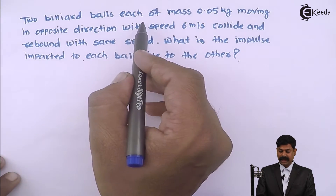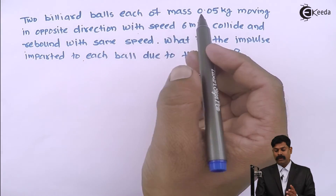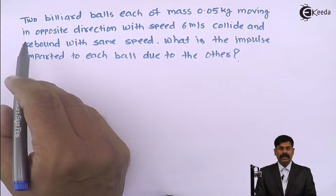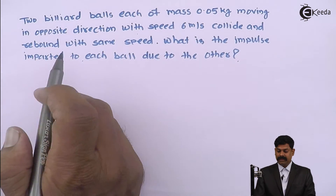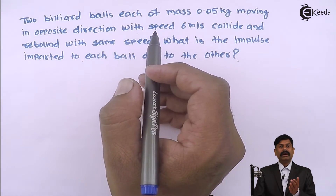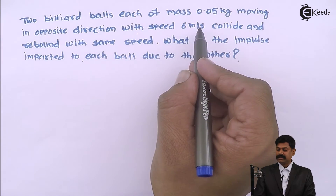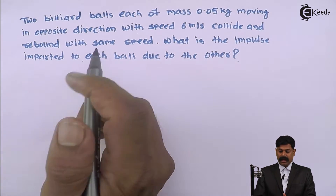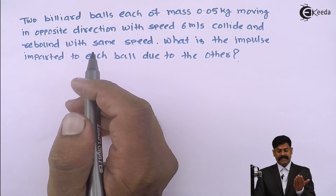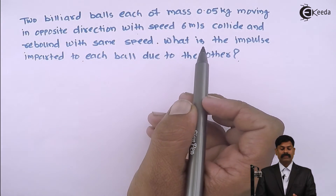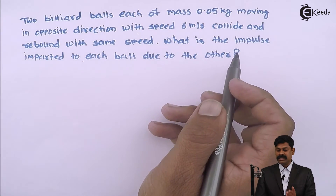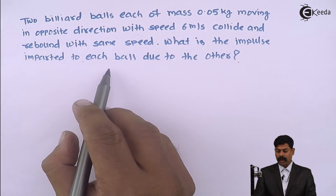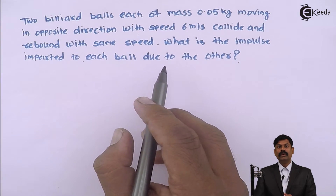Two billiard balls of 0.05 kg mass are moving in opposite directions with the same speed of 6 meter per second, they collide and rebound. We have to calculate what is the impulse imparted to each ball due to the other.